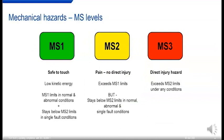Mechanical hazards are classified as MS1, 2, and 3. MS1 is safe to touch, staying below MS1 limits in normal and abnormal conditions, and below MS2 limits in a single fault condition. MS2 might cause pain but no direct injury — exceeding MS1 limits but staying below MS2 in normal, abnormal, and single fault conditions. MS3 is a direct injury hazard exceeding MS2 limits under any conditions.